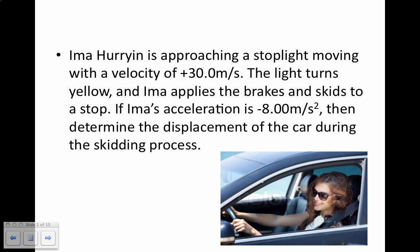IMA is in a hurry and approaching a stoplight, moving with a velocity of positive 30 meters per second. The light turns yellow and IMA applies the brakes and skids to a stop. If IMA's acceleration is negative 8 meters per second squared, then determine the displacement of the car during the skidding process.